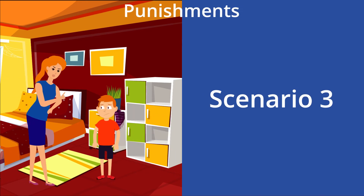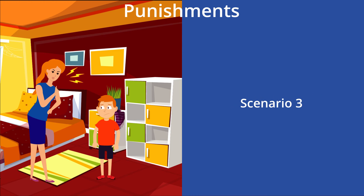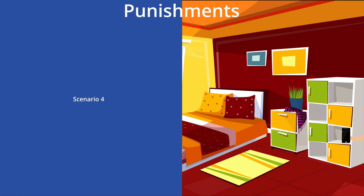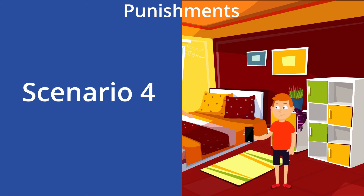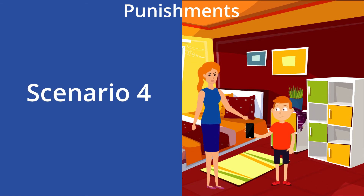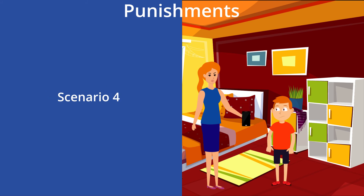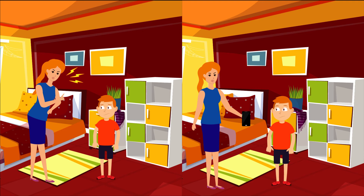Meanwhile, in the third scenario, your mom is threatening to give something undesirable to you — a long, unpleasant lecture — to discourage you from leaving your room messy. In the fourth scenario, your mom is threatening to take something desirable away from you — your phone — to discourage you from leaving your room messy. These two scenarios can be grouped together as punishments.